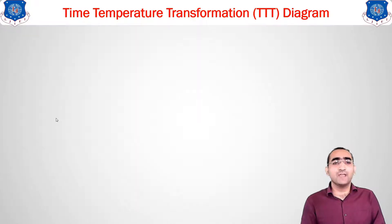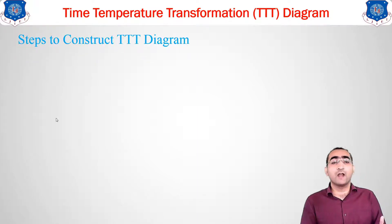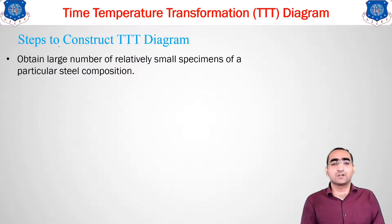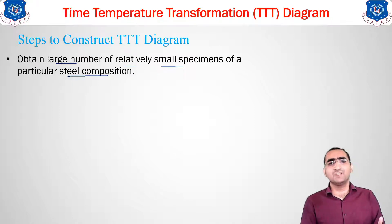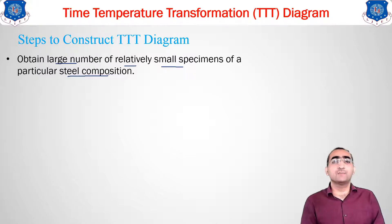Let us begin with the construction of the TTT diagram. First, obtain a very large number of relatively small specimens — all of the same steel composition for which you want to find the particular phase transformation.